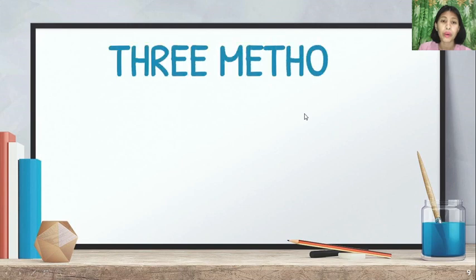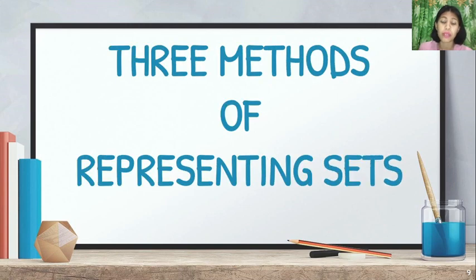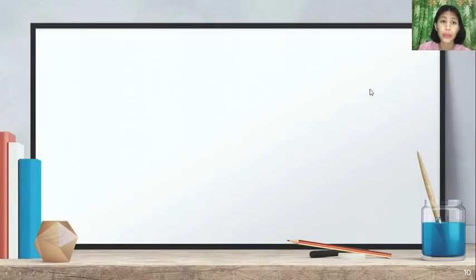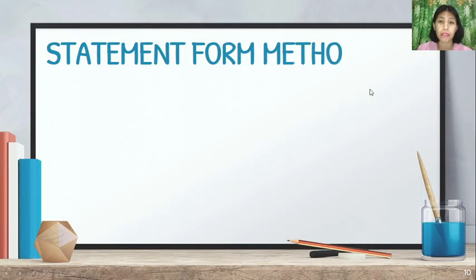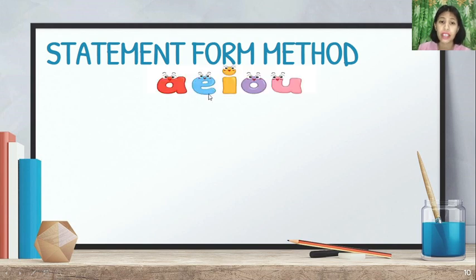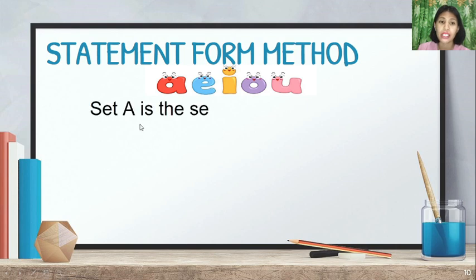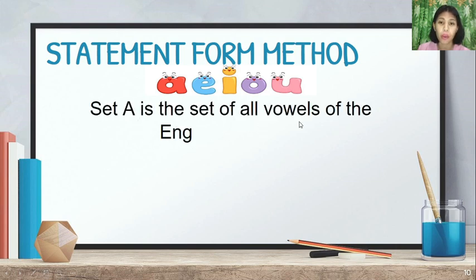We have three methods of representing sets. The first one is the statement form method. From the word 'statement,' we will use a sentence. For A, E, I, O, U — we represent this as Set A. In statement form: 'Set A is the set of all vowels of the English alphabet.' This is the statement form.